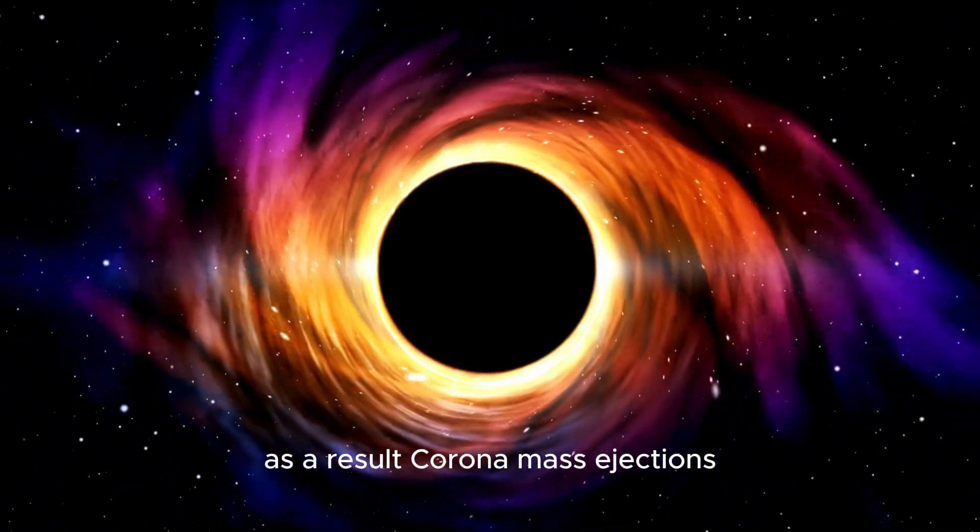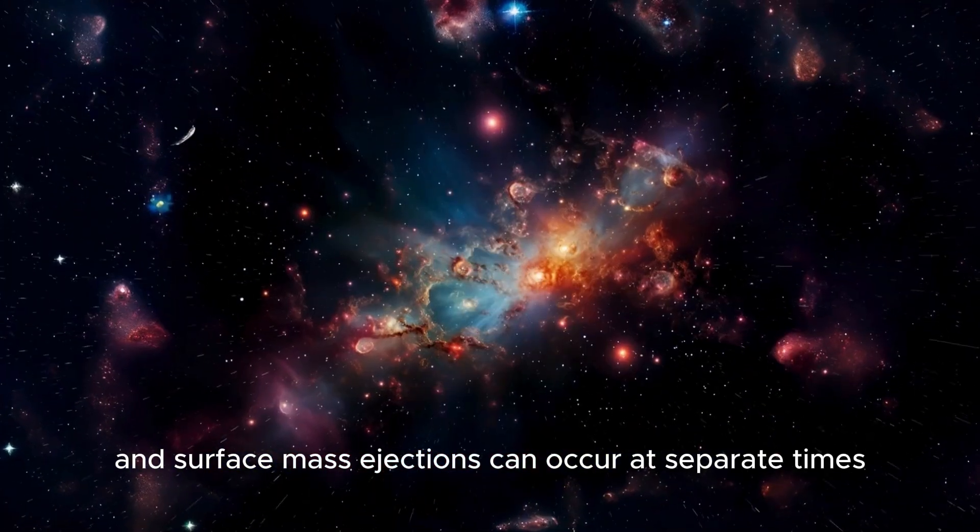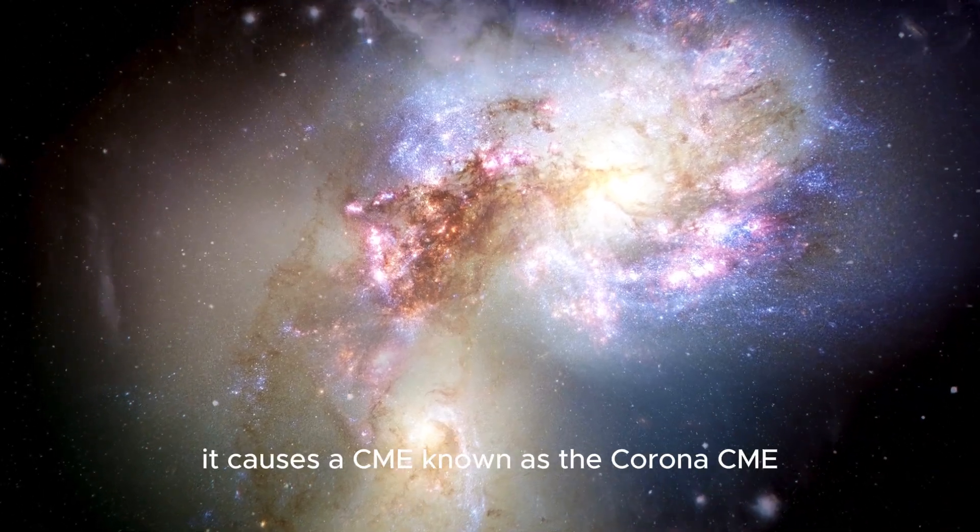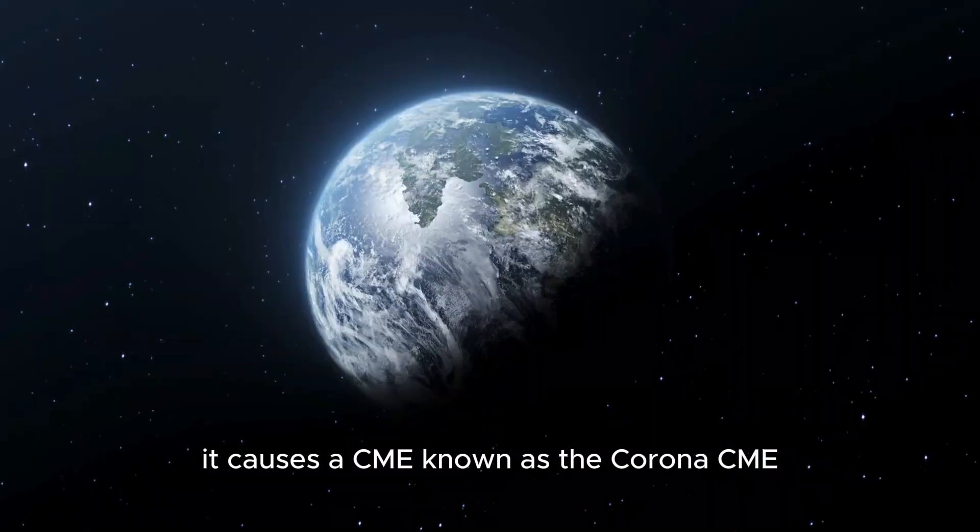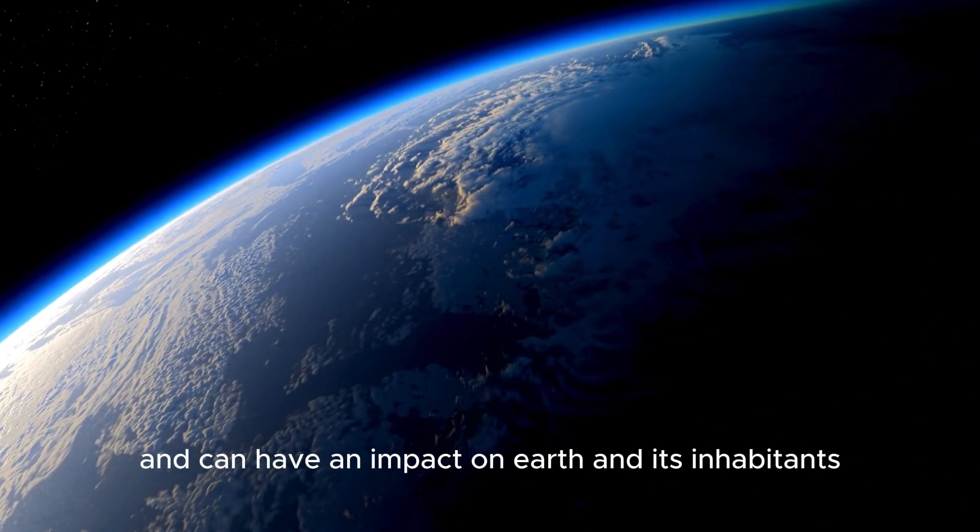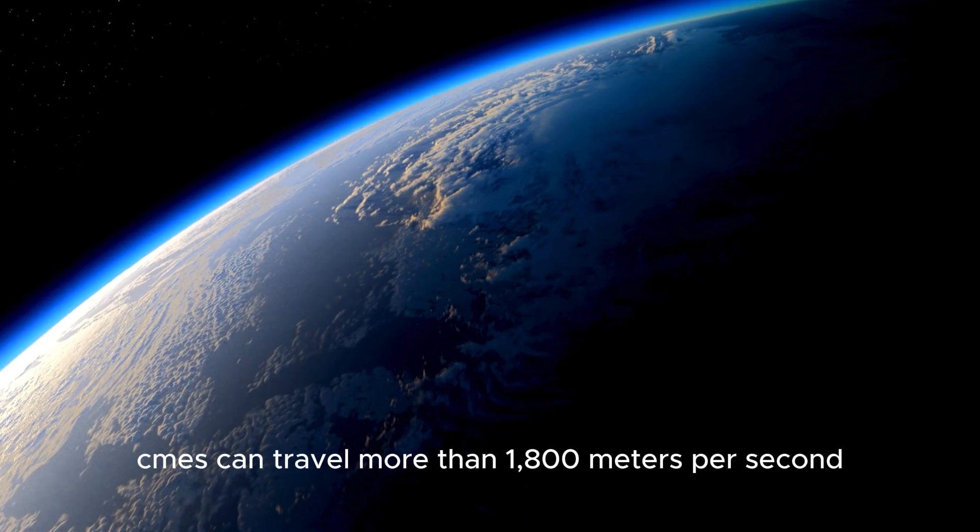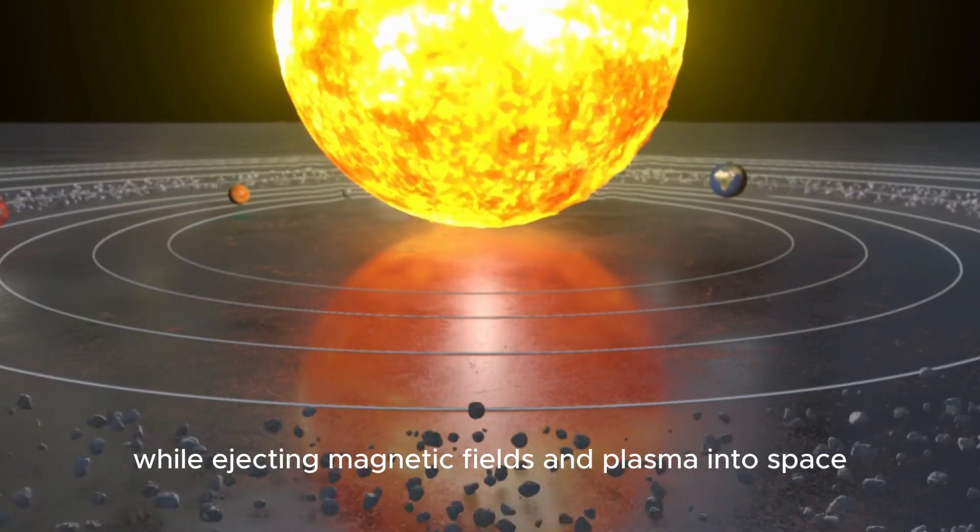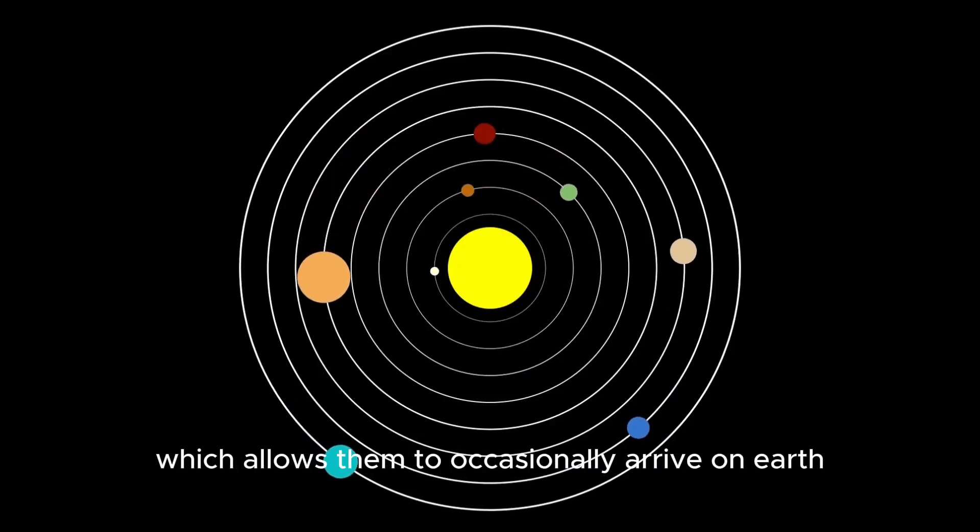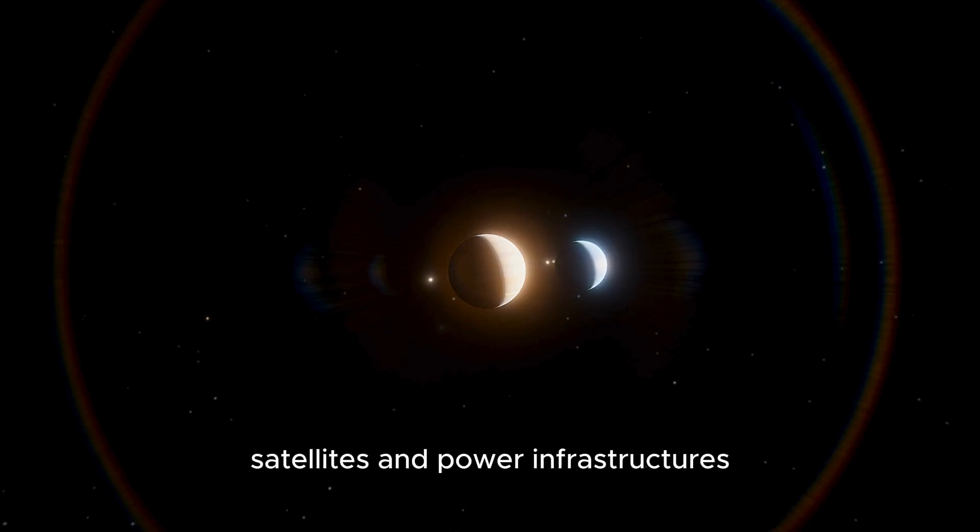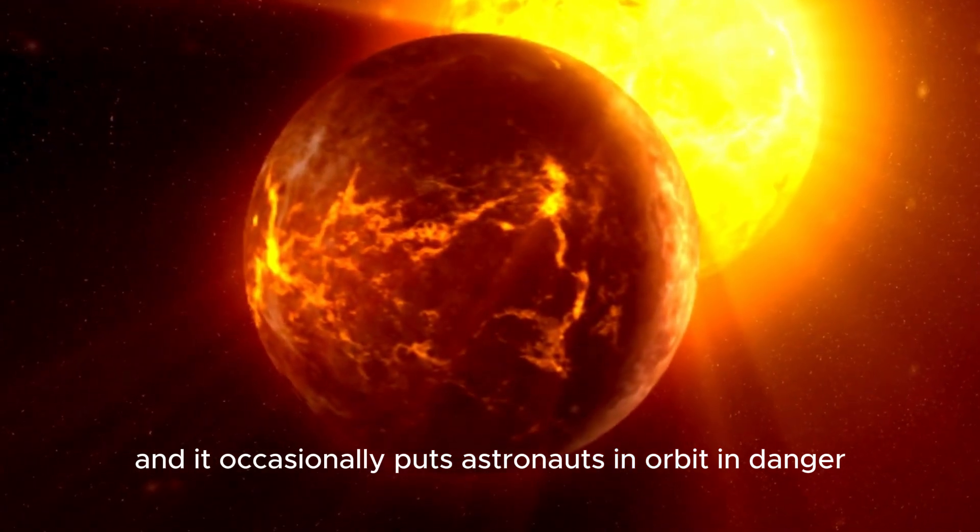As a result, coronal mass ejections and surface mass ejections can occur at separate times. CMEs can travel more than 1,800 meters per second while ejecting magnetic fields and plasma into space, which allows them to occasionally arrive on Earth in a matter of hours. A CME can disrupt and harm Earth satellites and power infrastructures when it occurs on the side of the Sun that faces the planet, and it occasionally puts astronauts in orbit in danger.